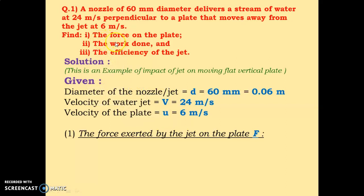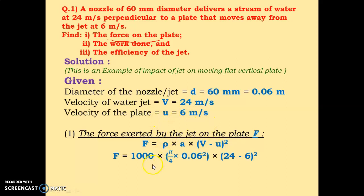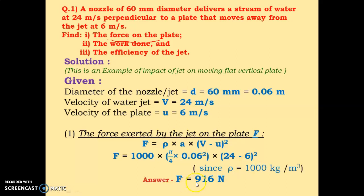We have to find the force exerted by the jet on the plate. The formula is F = ρ × A × (V − u)², where ρ is the density of water, A is the area of the jet, V is the velocity of the jet, and u is the velocity of the plate. Substituting: ρ = 1000, area = π/4 × (0.06)², and (24 − 6), the force comes out to 916 Newton.